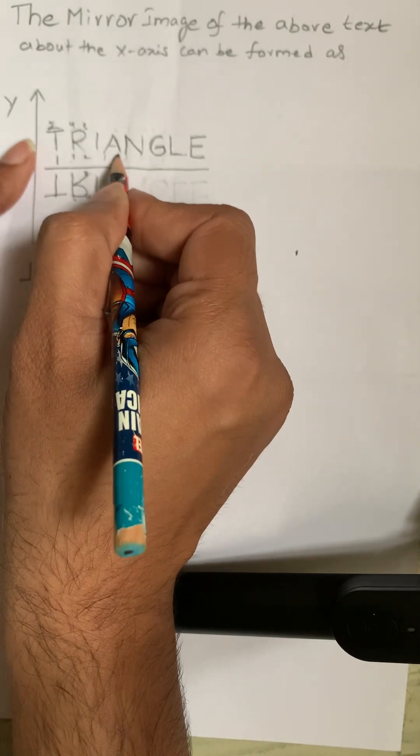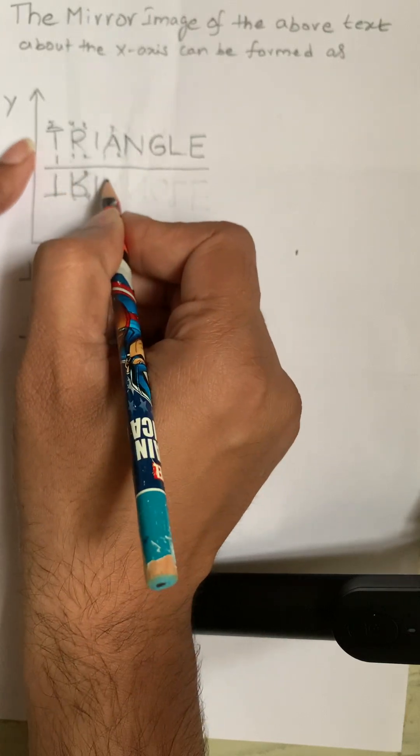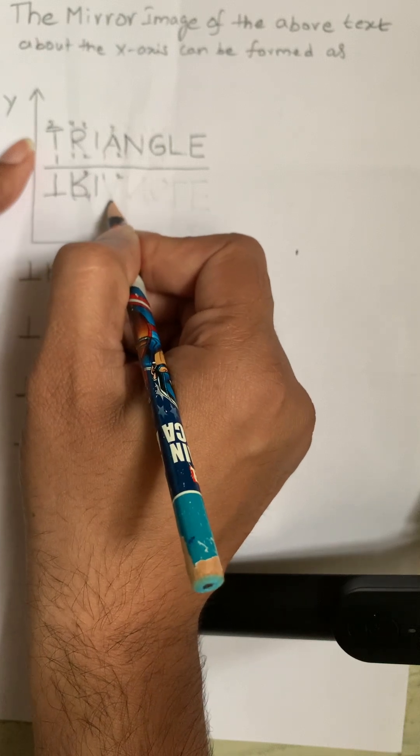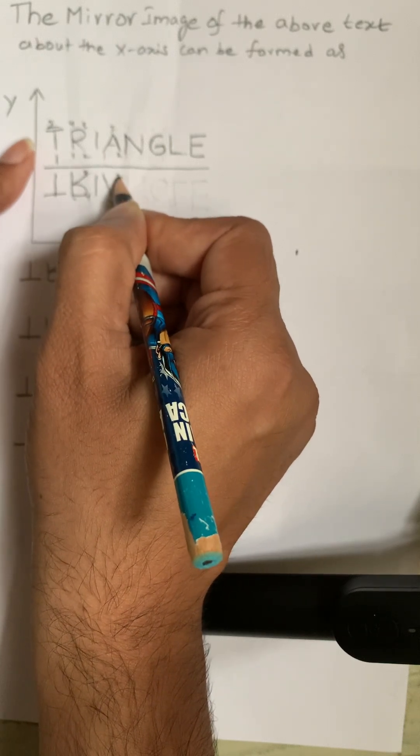Here one remains same, two remains same, and three remains here. 1, 2, and 3 - this is the mirror image.